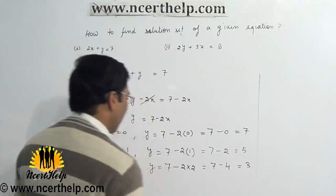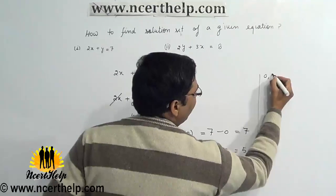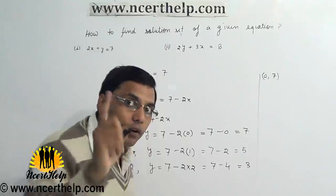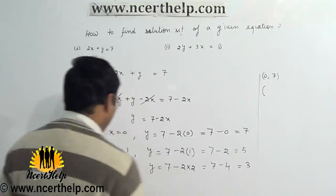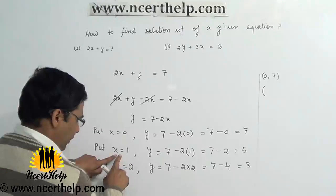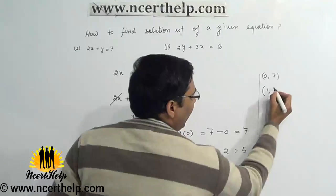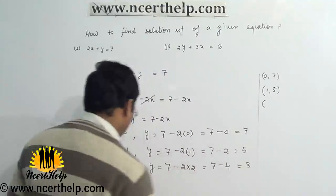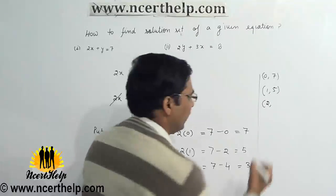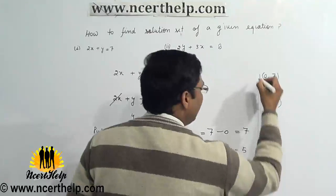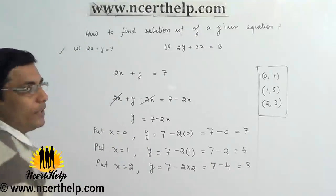We can write them as: first, x equals 0 and y equals 7; second, x equals 1 and y equals 5; third, x equals 2 and y equals 3. We always write the value of x first. These are the solution sets of the first given equation.